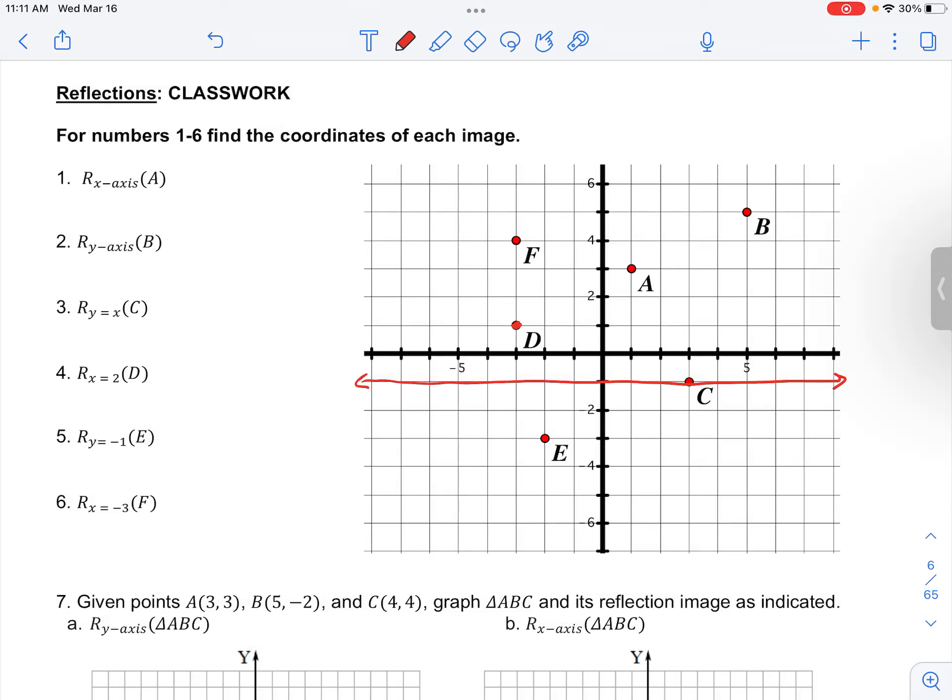Number 5 in your classbook for reflections asks you to find the coordinates of the image of E when it's reflected across the line Y equals negative 1.